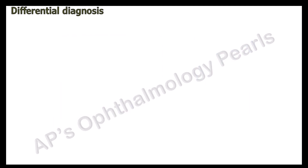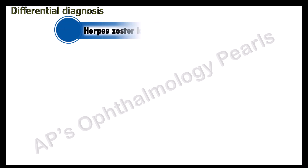Differential diagnosis includes conditions in which dendrite-like lesions occur, called pseudodendrites. An example is herpes zoster keratitis, where the dendrites are smaller in size, there is minimal fluorescent staining, and no terminal bulbs.